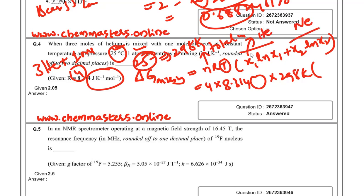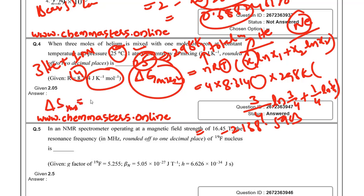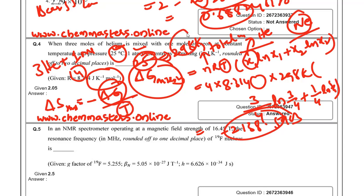For helium, the mole fraction is 3/4, and for neon it is 1/4. Substituting: ΔG_mix = 4 × 8.314 × 298 × [(3/4)ln(3/4) + (1/4)ln(1/4)], giving approximately −2130.59 J. After finding ΔG_mixing, use ΔS_mix = −ΔG/T, substituting the ΔG value and T = 298 K to find the entropy of mixing.